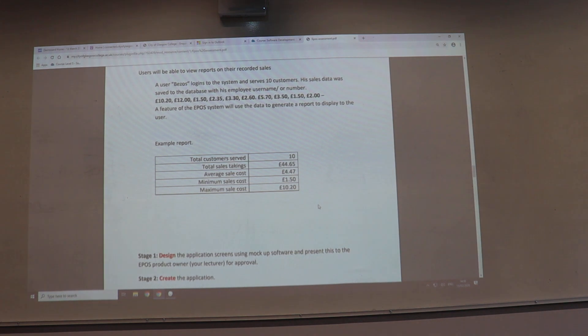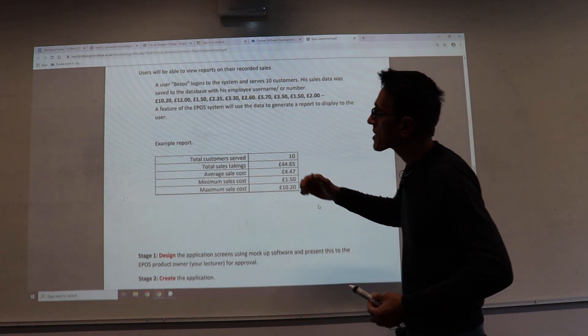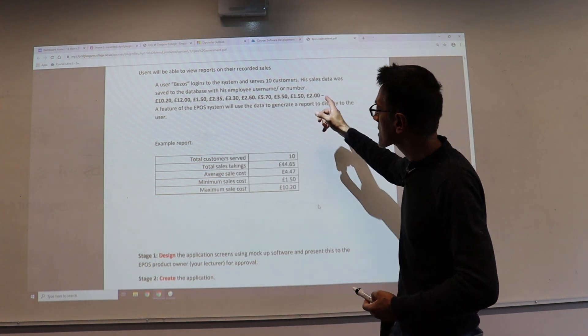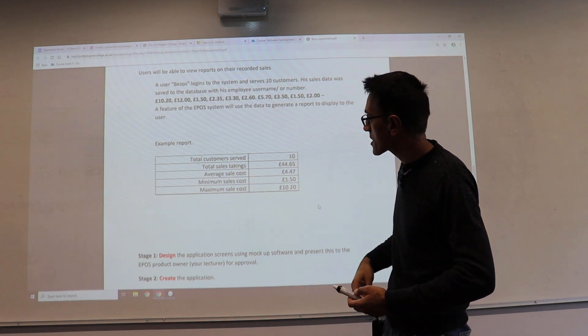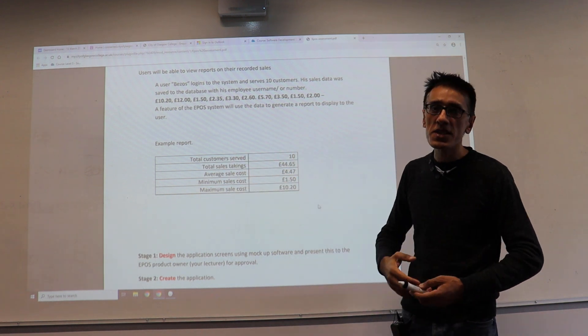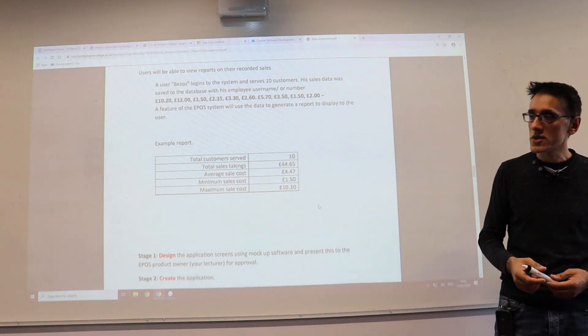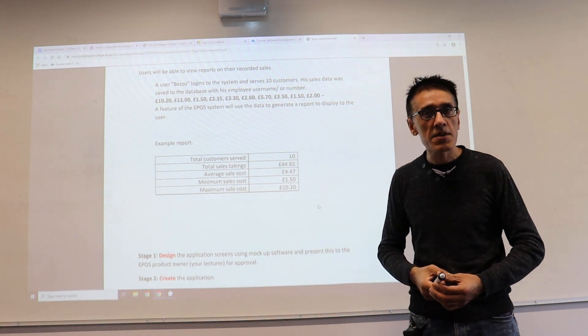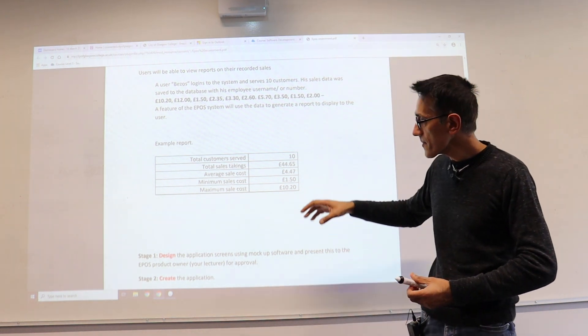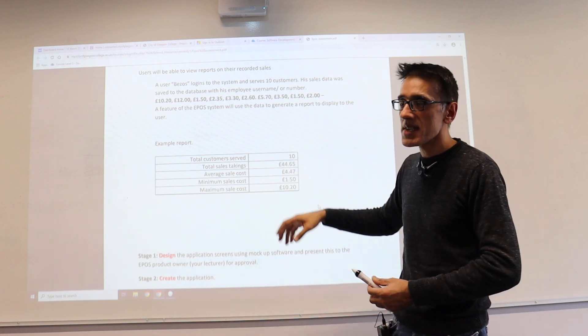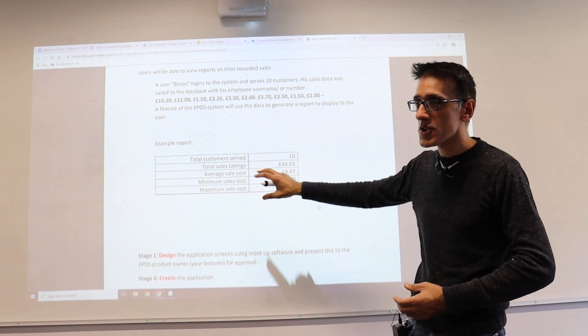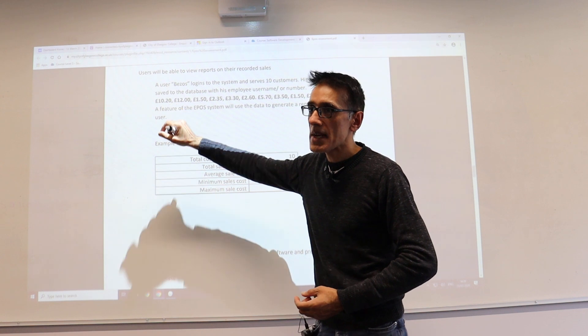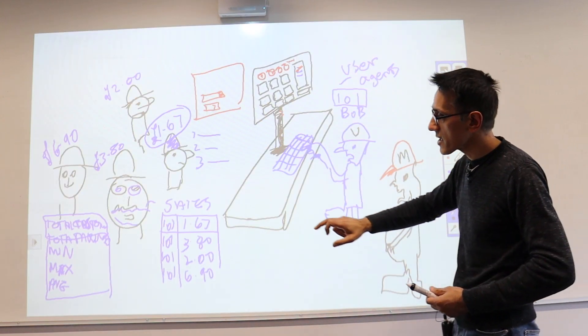Here's an example: user Bezos logs into the system, serves ten customers. These are their ten value items, the total cost sale, and this is what you're displaying on the screen as an example for those customers. Total served, sales takings, average sale cost, minimum and maximum. That'll be a table in the database. This is not saved in the database—this is a report you'll generate on your screen. These numbers get saved in the sales table.